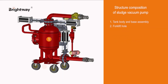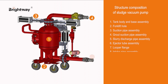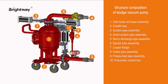1. Tank body and base assembly. 2. Forklift hole. 3. Suction pipe assembly. 4. Ground suction pipe assembly. 5. Slurry discharge pipe assembly. 6. Ejector tube assembly. 7. Looper flange. 8. Intake pipe assembly. 9. Pressurized pipe assembly. 10. Pneumatic control box.